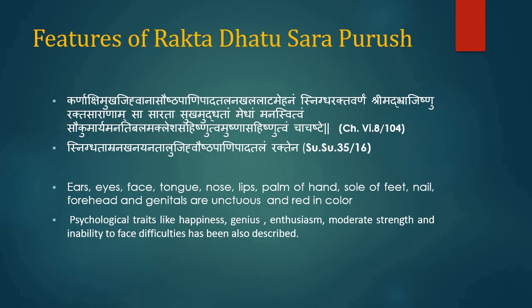Features of Rakta Sara individuals: Those having Rakta as constitutional essence have ears, eyes, face, tongue, nose, lips, palm of hand, sole of feet, nails, forehead and genitals that are unctuous and red in colour, and they are handsome. As psychological traits, this essence indicates happiness, insolence, intelligence, strong-mindedness, delicacy, moderate strength, intolerance to trouble or pain and heat. Shushrut has mentioned body parts as unctuous and copper-coloured. These traits are used clinically for the assessment of nutritional status of Rakta Dhatu and for clinical conditions like anemia.